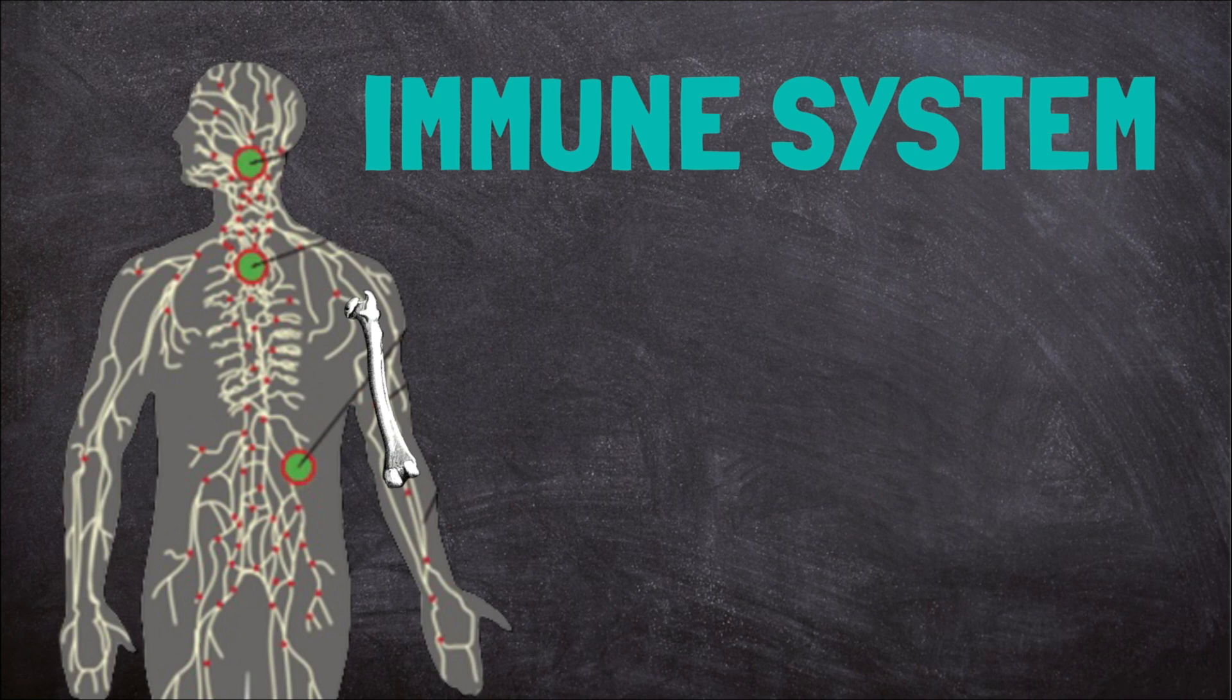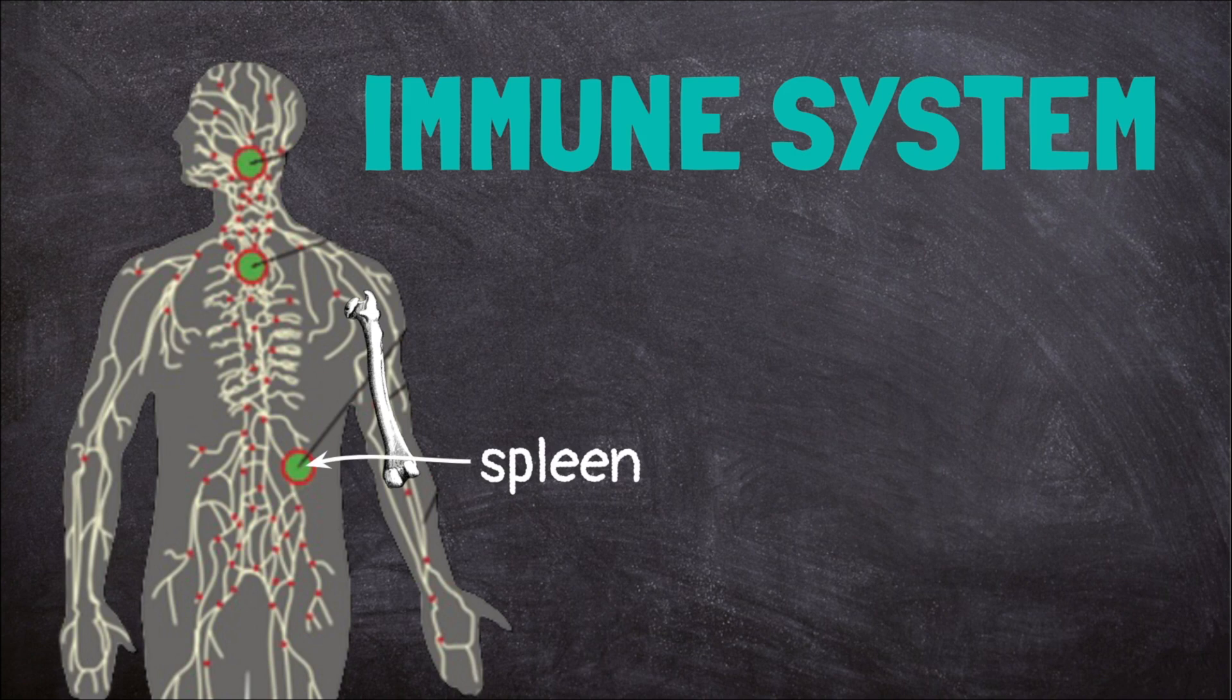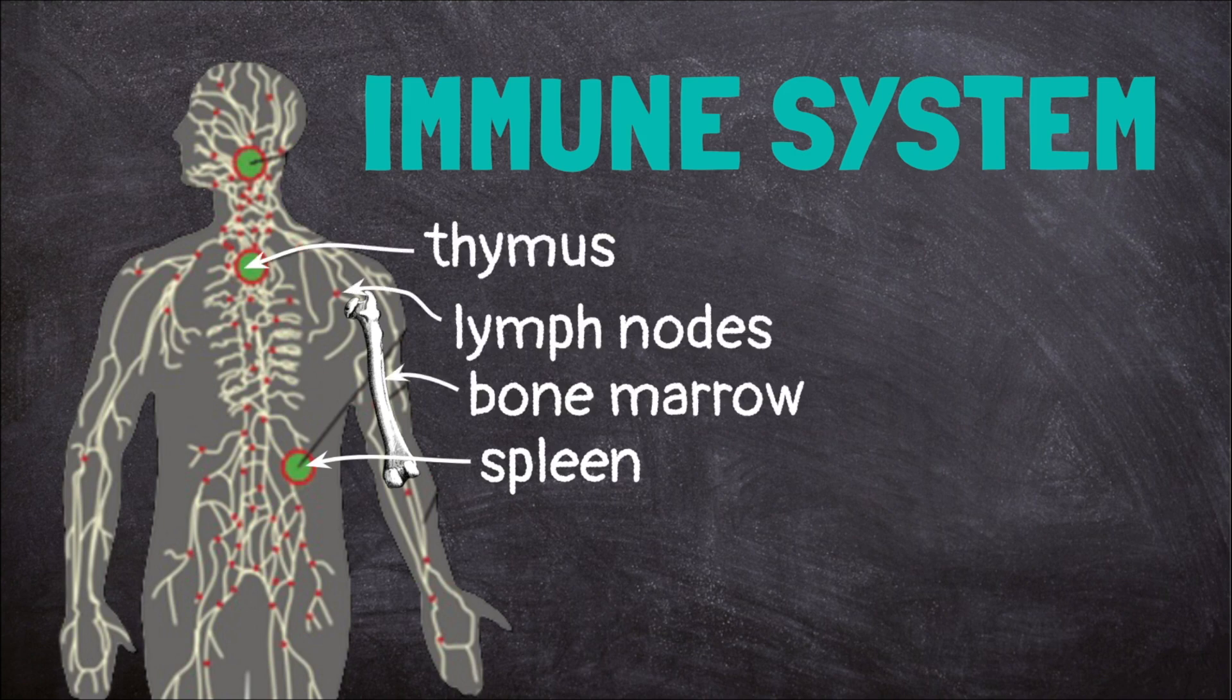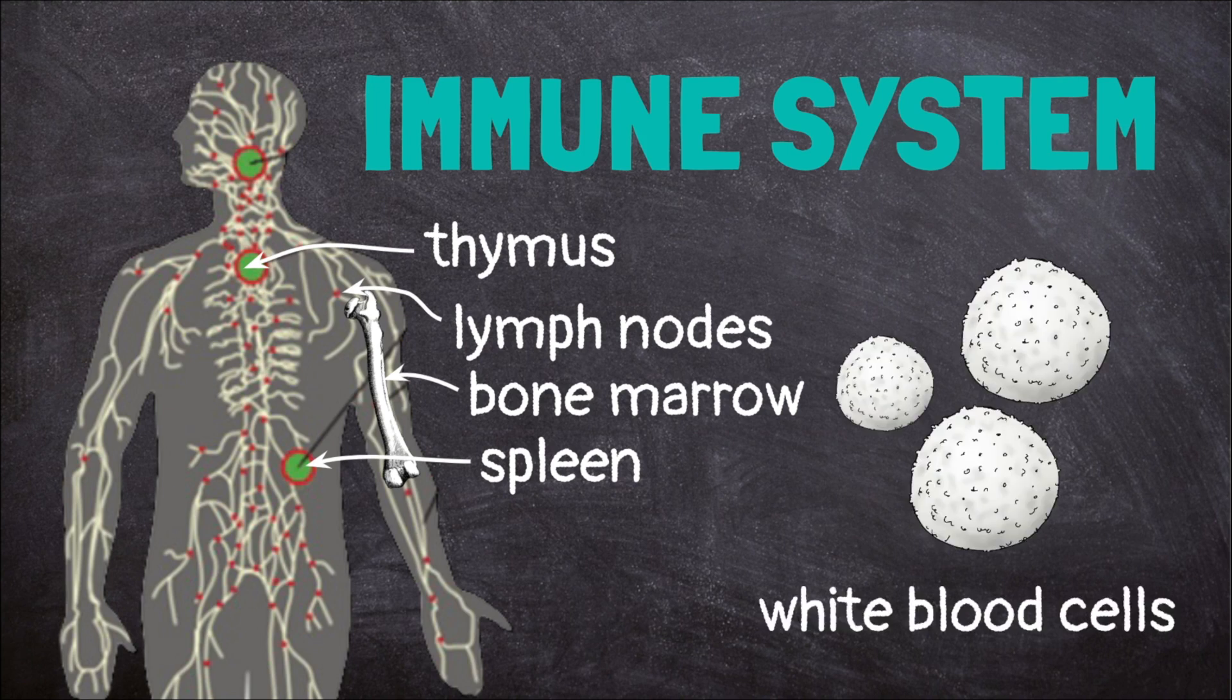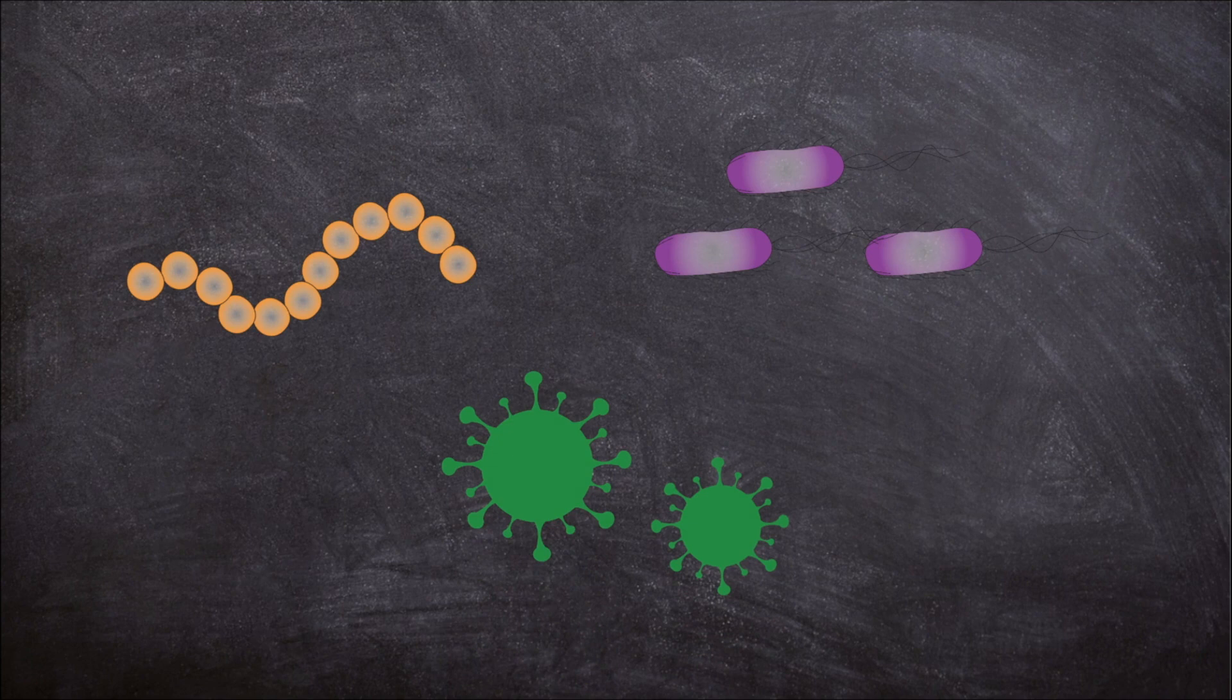Your spleen, thymus, lymph nodes, and bone marrow are all part of this system. These body parts make and store special cells called white blood cells. When harmful invaders called antigens get into your body, the white blood cells spring into action and attack.